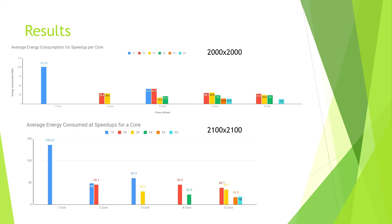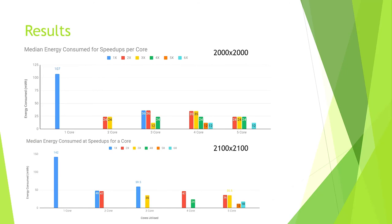Here we see the average energy consumption per speedup per core. As seen before, at one core only a 1x speedup is achieved. For the 2,000 matrix, the 3x speedup reduces when 3 cores are utilized, but the 2x speedup energy usage increases when the number of cores increases. The lowest energy is generally consumed by speedups that are equal to the number of cores utilized. Here we also have the median energy consumed per speedup per core.